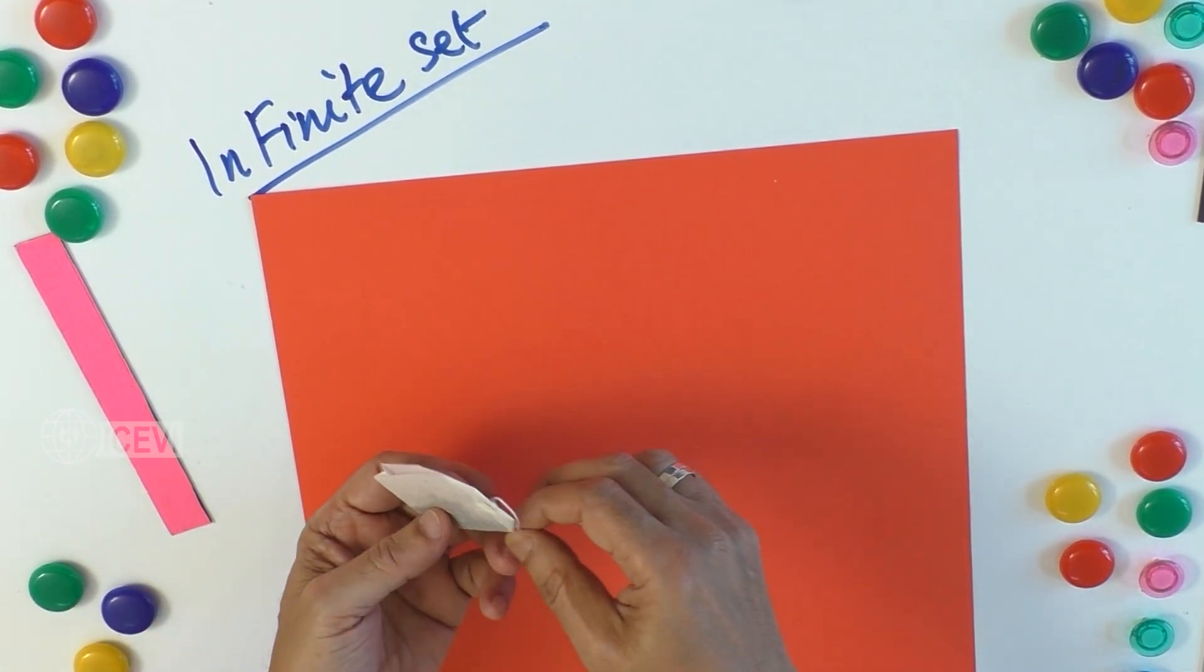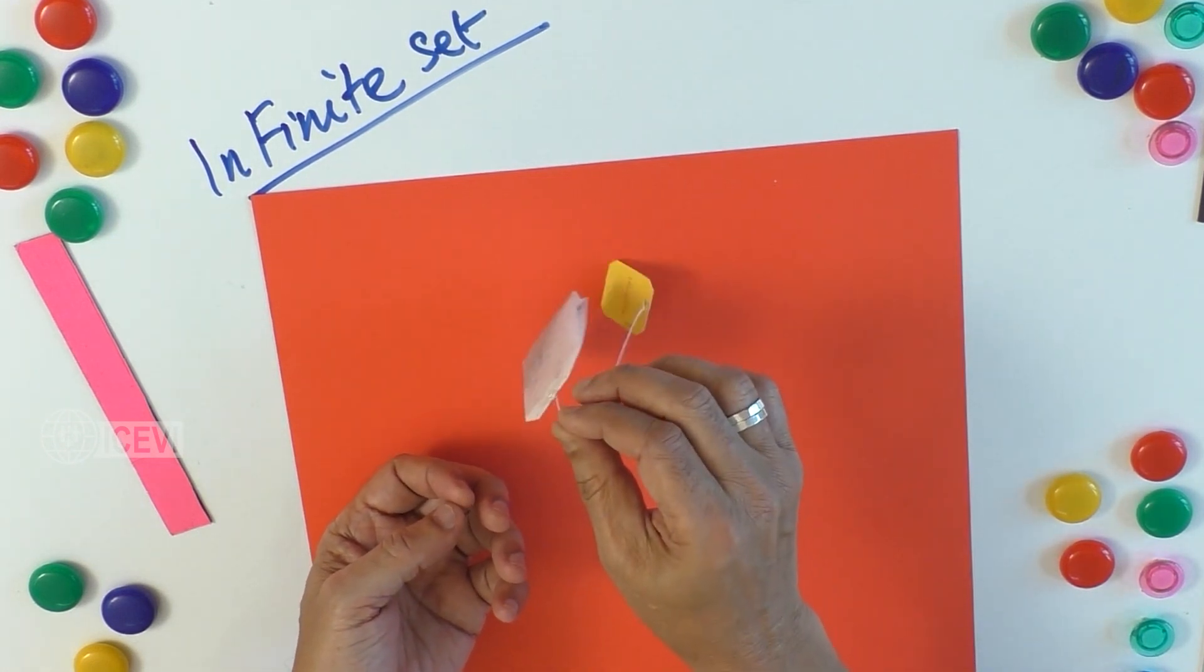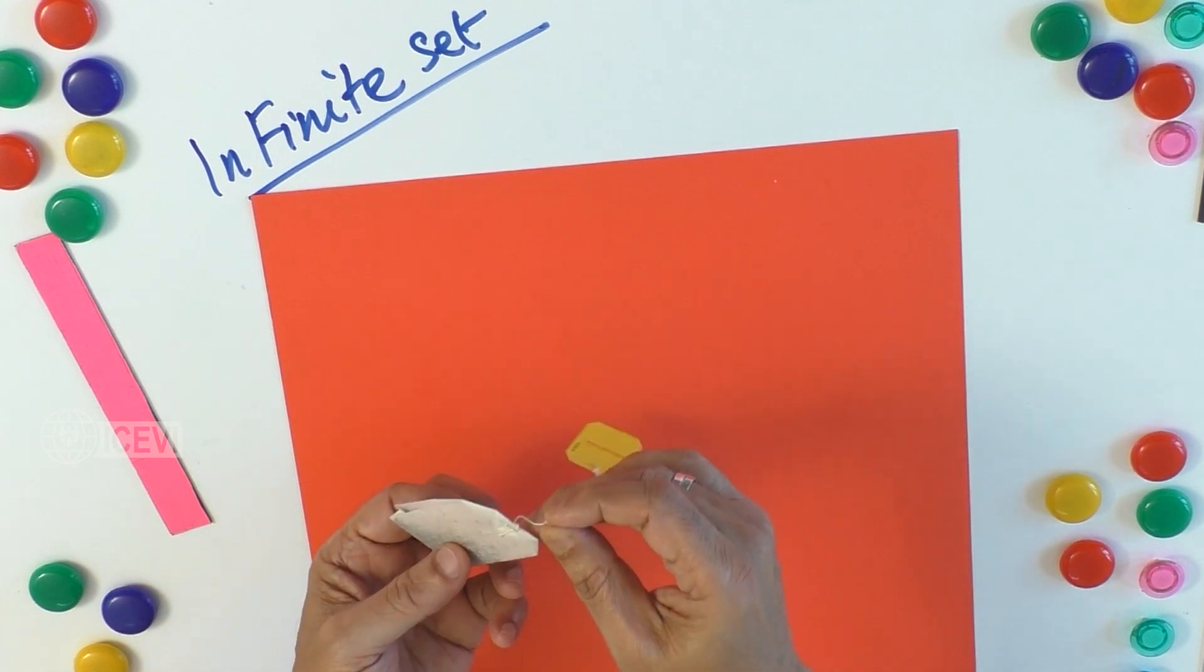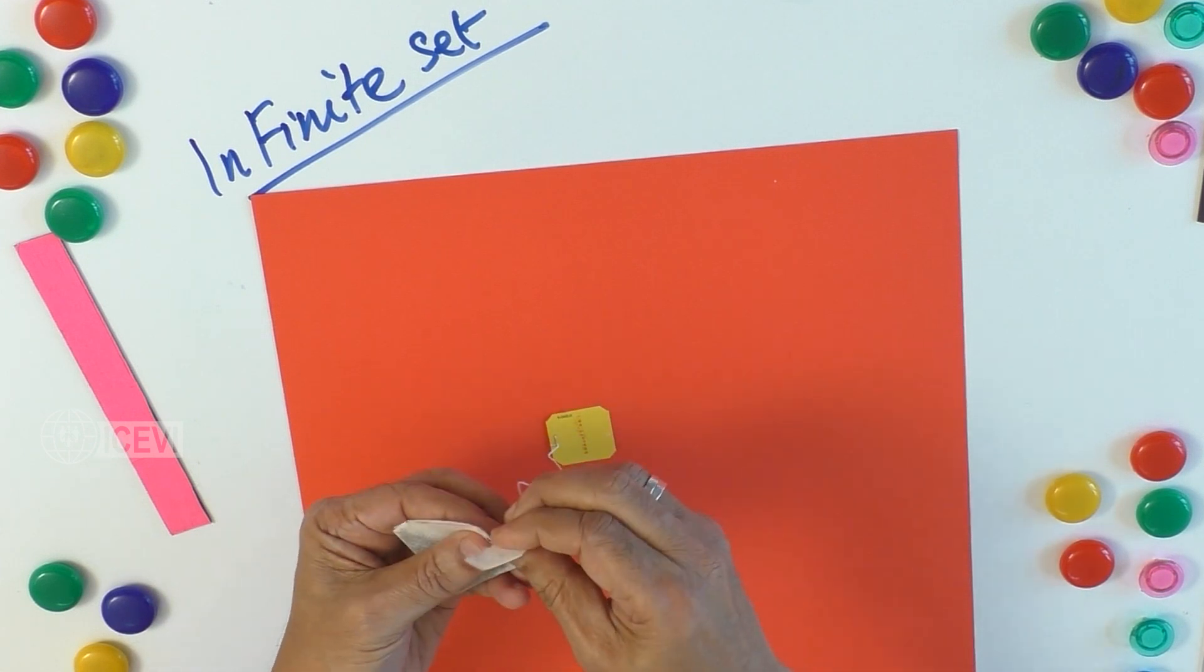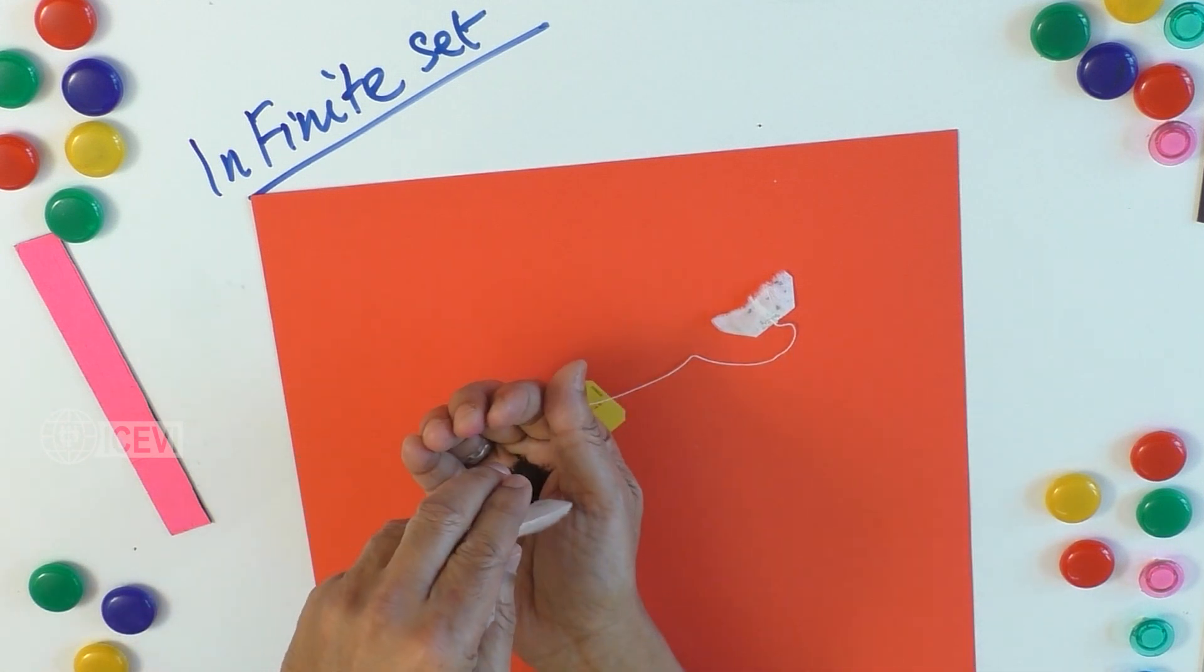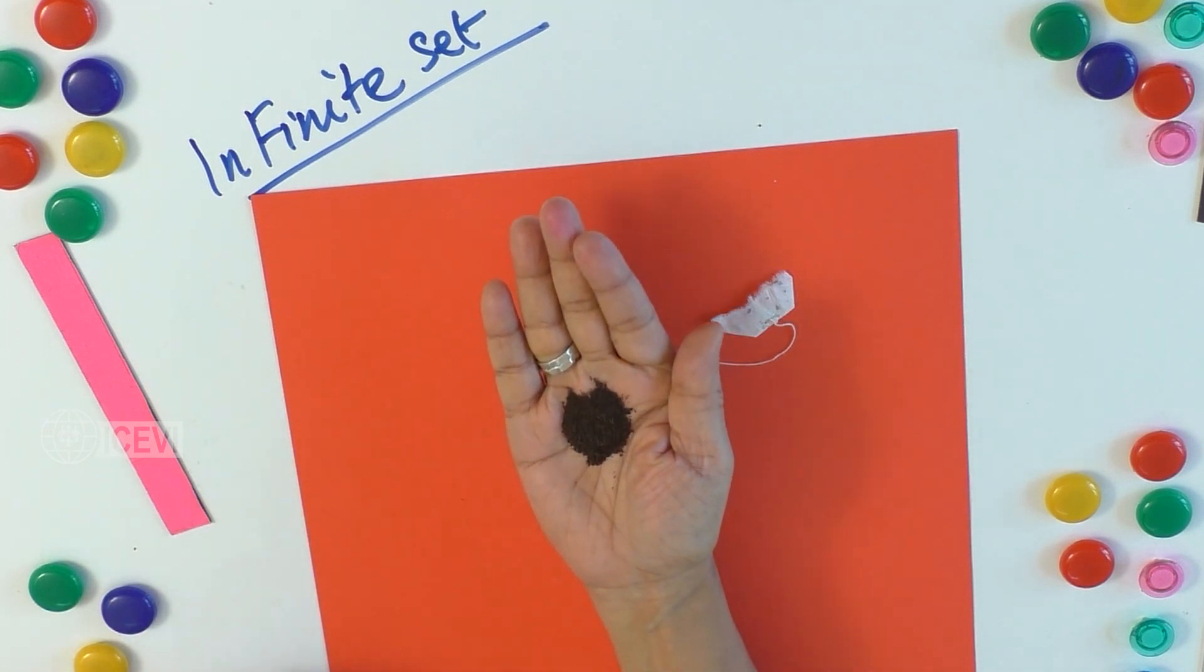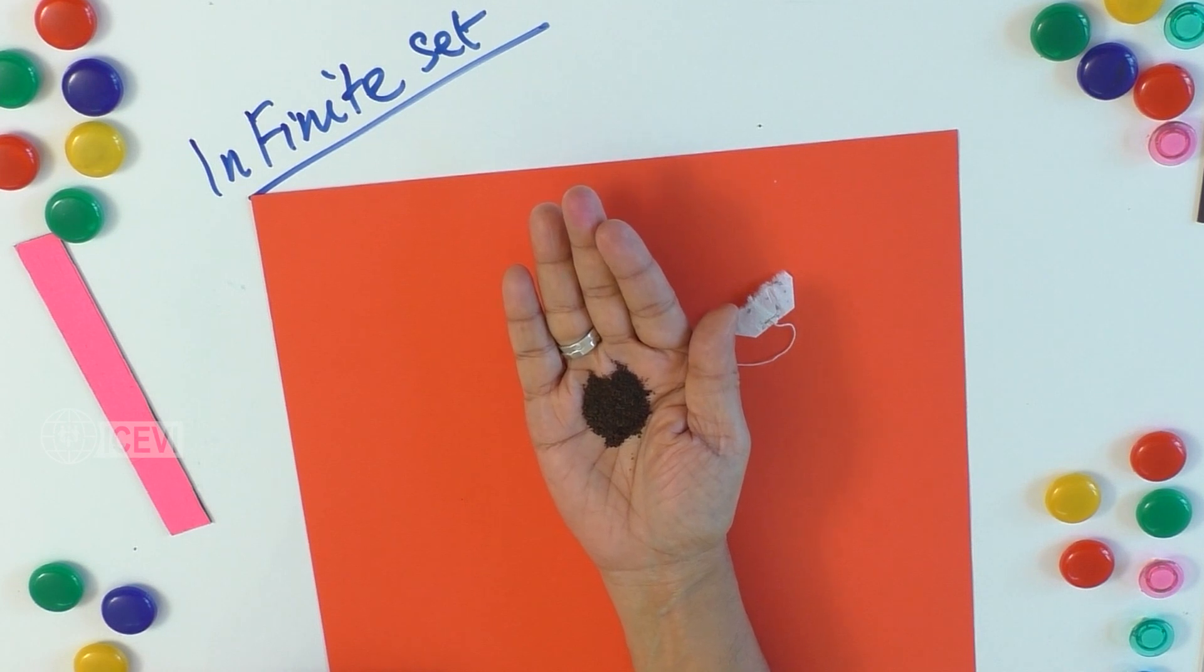Let us take the example of tea bag. A tea bag is a finite set because you are not looking at the tea inside. You are talking about the tea bag, so that becomes a unit. Suppose I take the tea right from the tea bag and then make a set. This is something which cannot be counted.